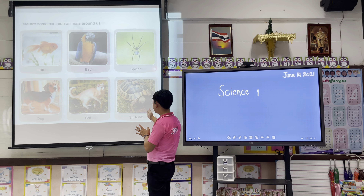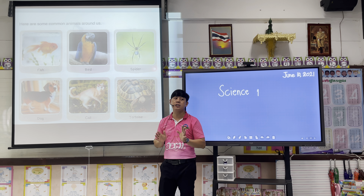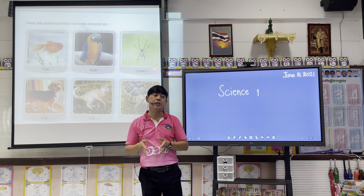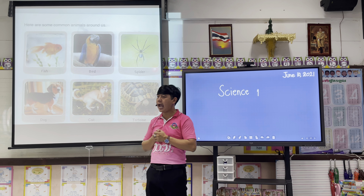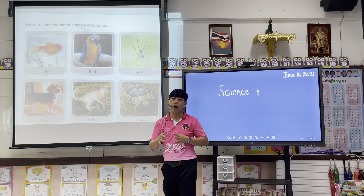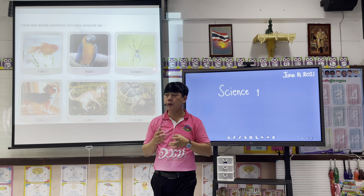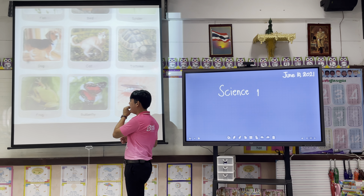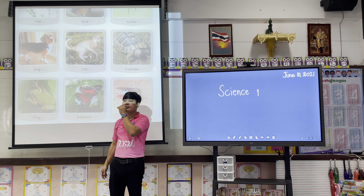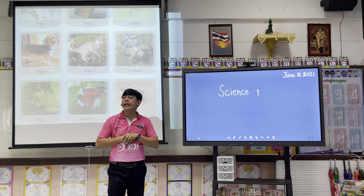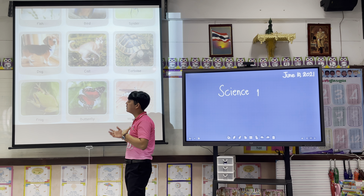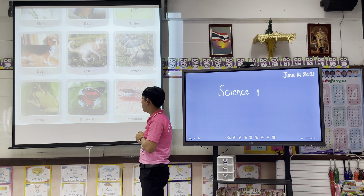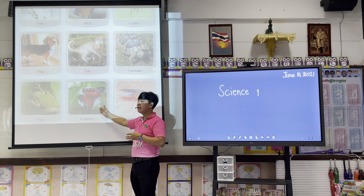Next, tortoise. A tortoise can live in water or on land — it can live underwater, on water, or on land. It can walk, but a turtle is very slow in motion. Next, the frog. A frog normally lives in lakes and in ponds, and usually appears during the rainy season. Next, butterfly — butterfly lives in the garden.